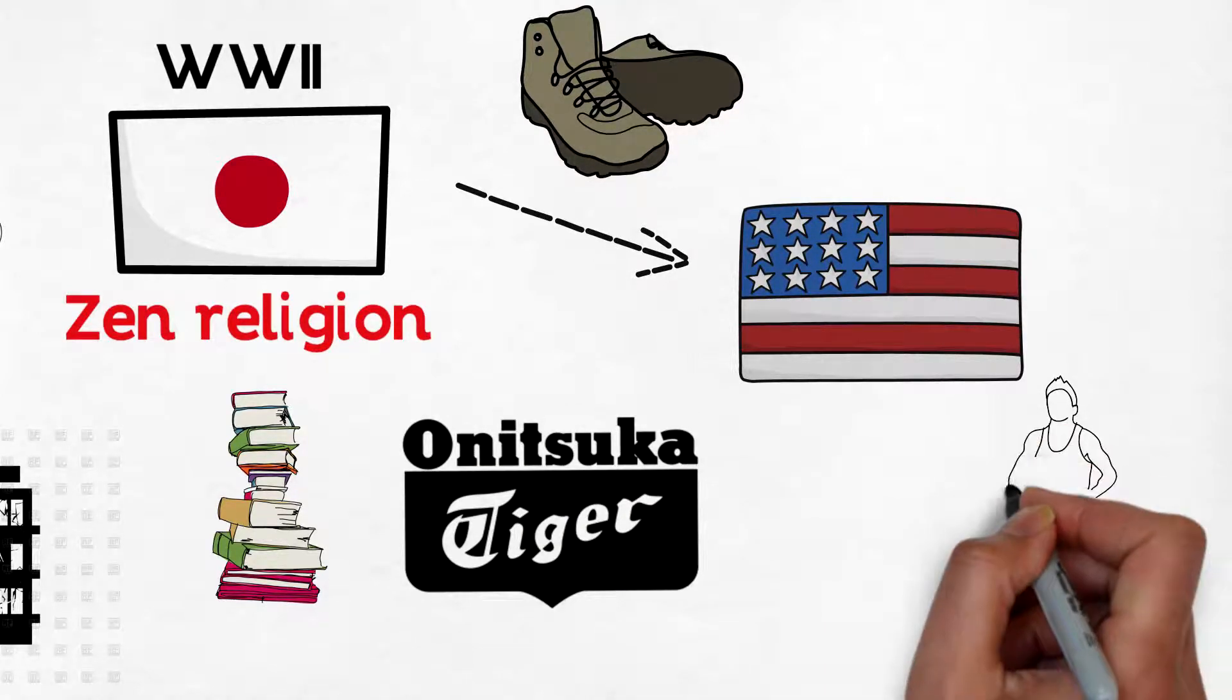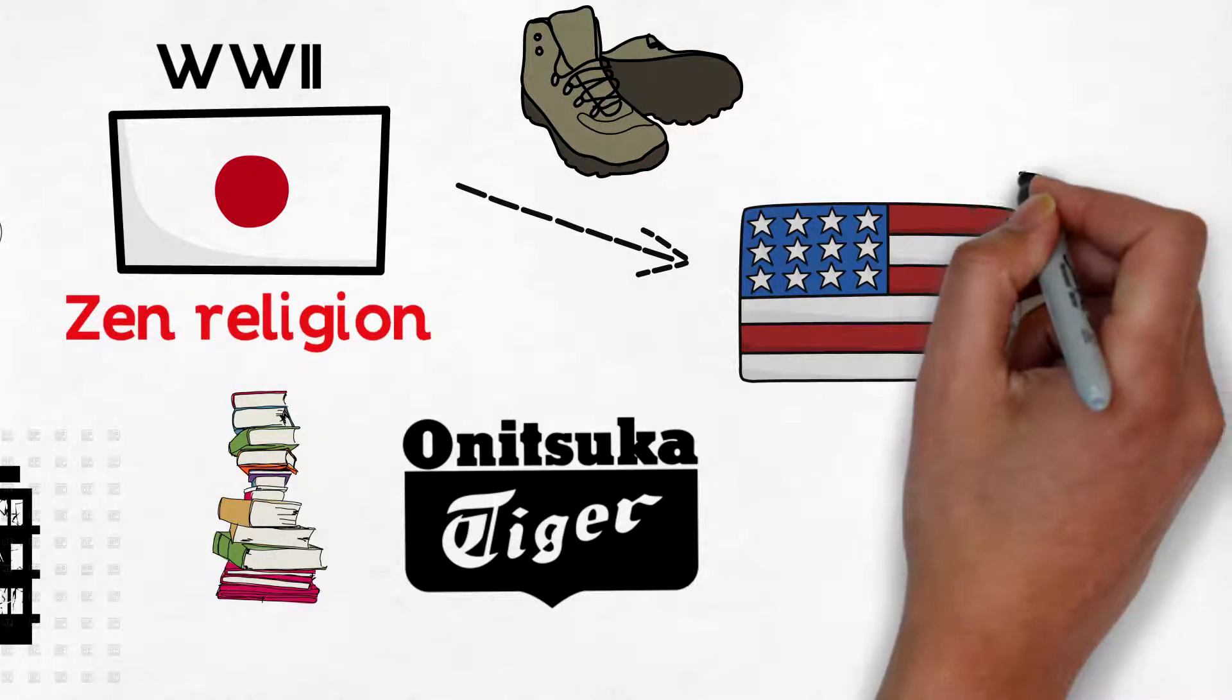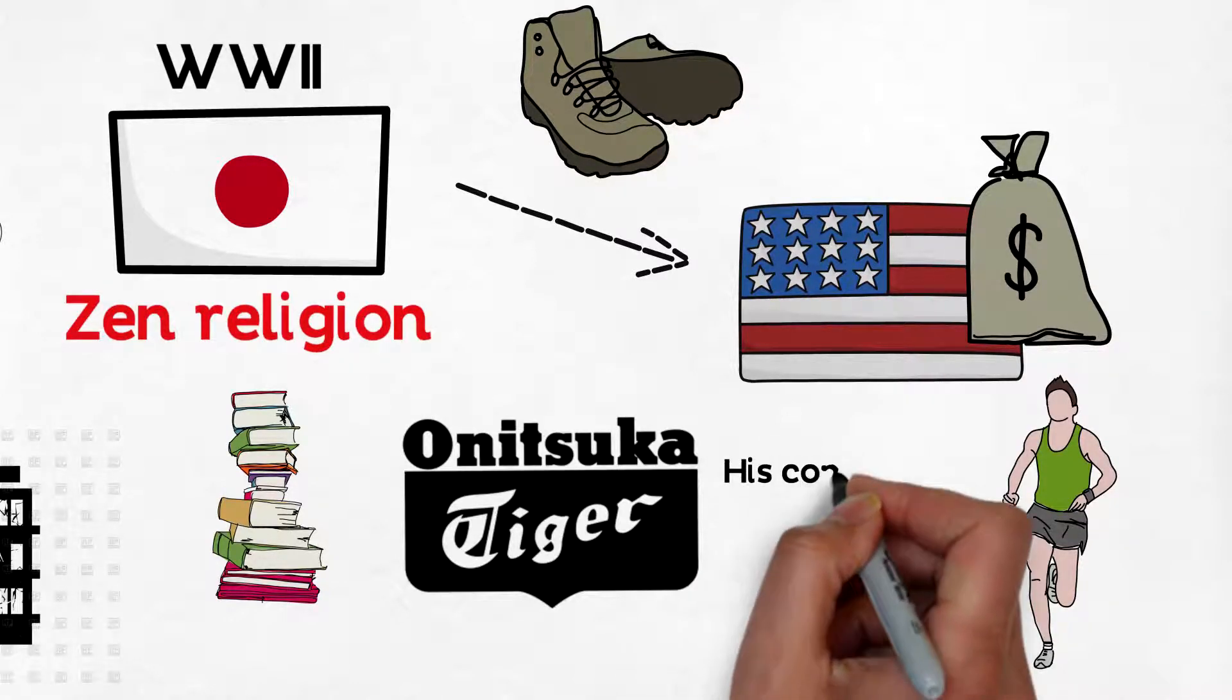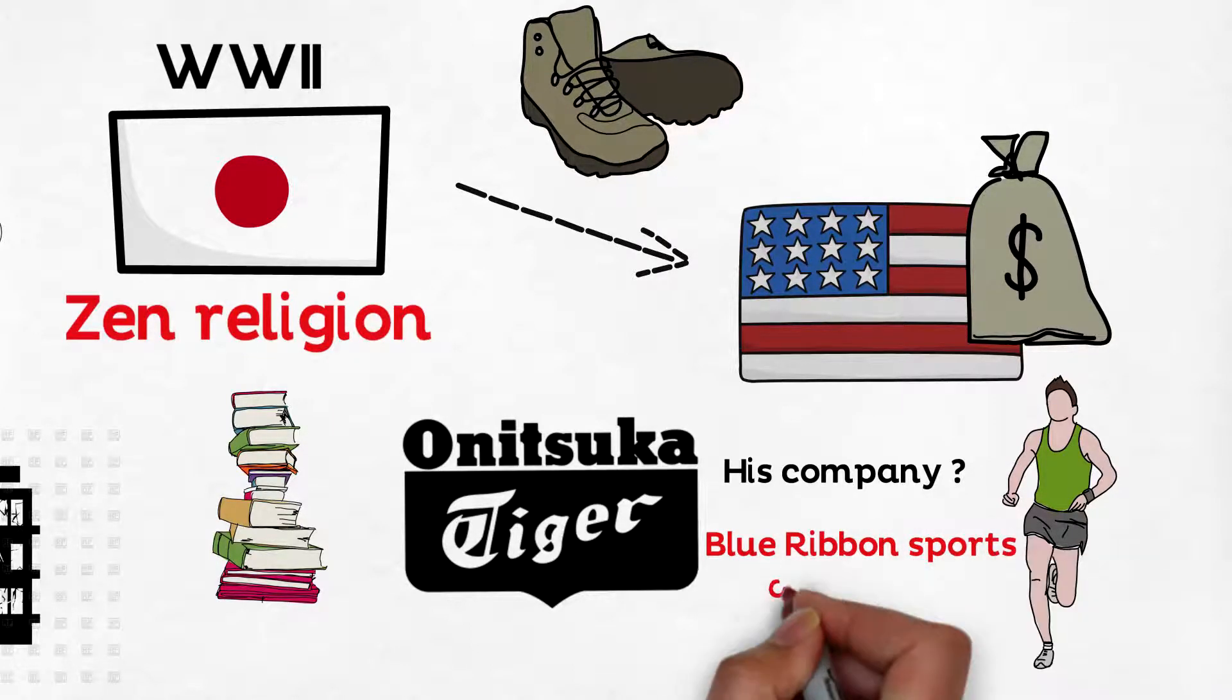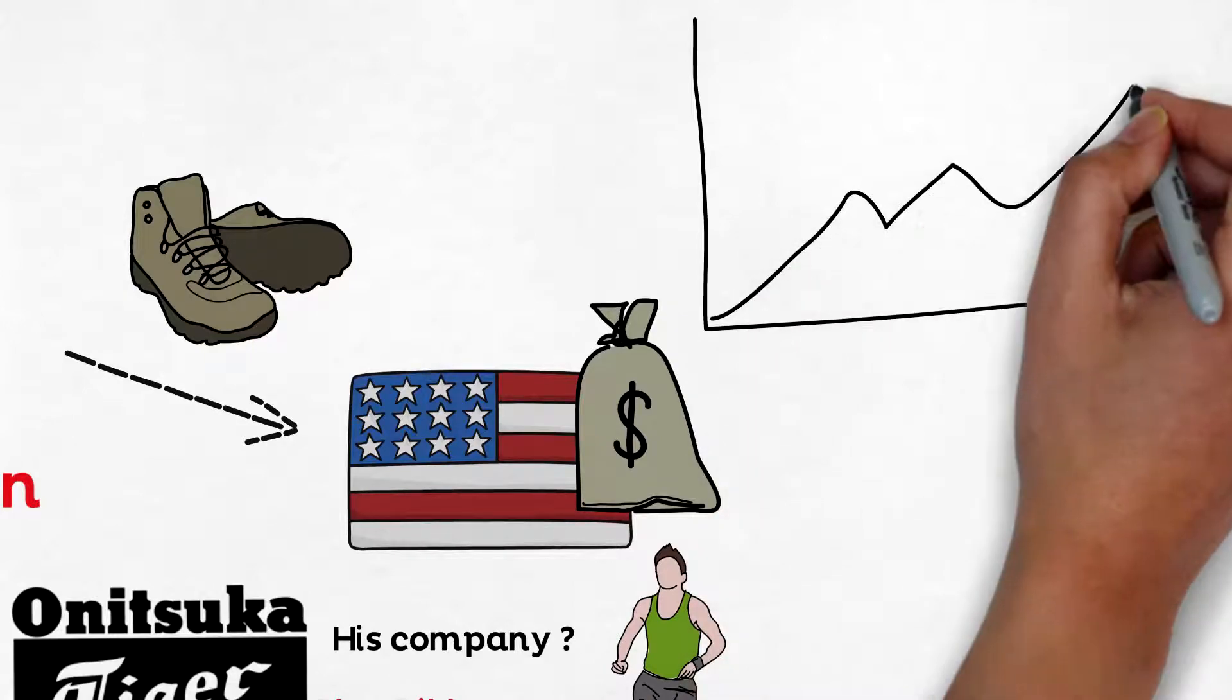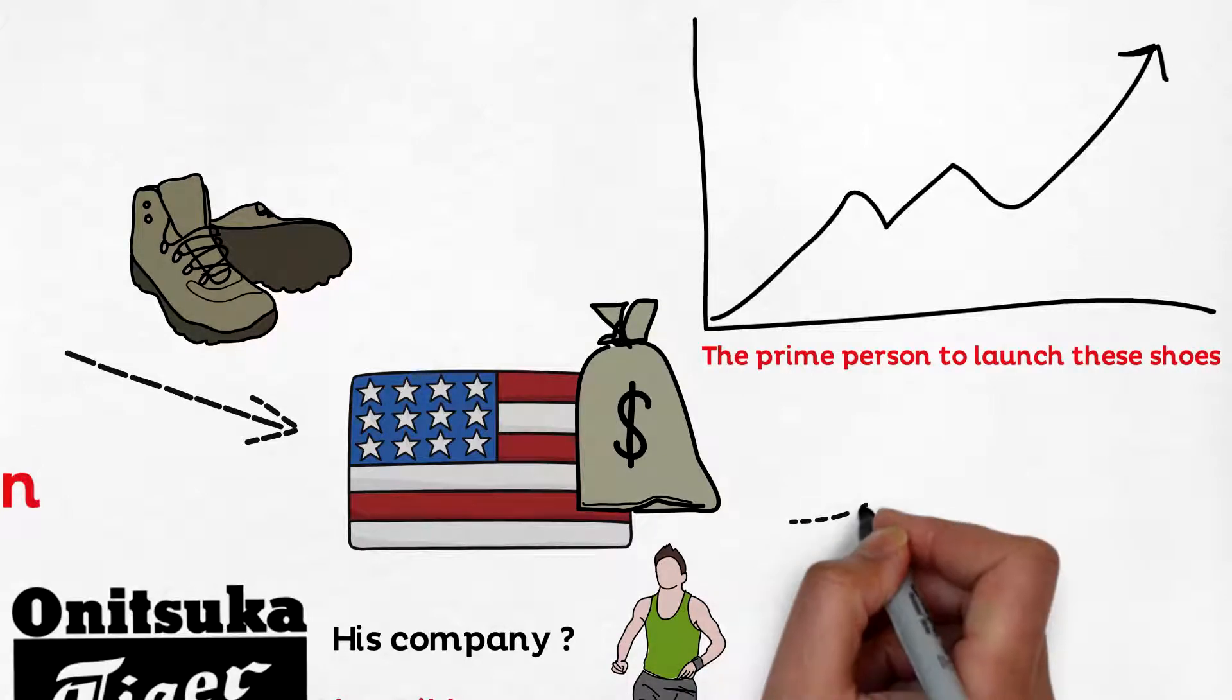There he also met with the locals and discussed his idea of importing Japanese shoes to America. He then visited a factory in Kobe called Onitsuka, which made Tiger shoes. Phil used to be a runner, and when he saw the shoes, he was confident he would be able to sell the shoes in America. When he met the management of Onitsuka, they asked him about his company and he just made up a name called Blue Ribbon Sports of Portland. Phil was an MBA from Stanford. He got to speak the business language and got the management confidence that he would be the prime person to launch the shoes in America.